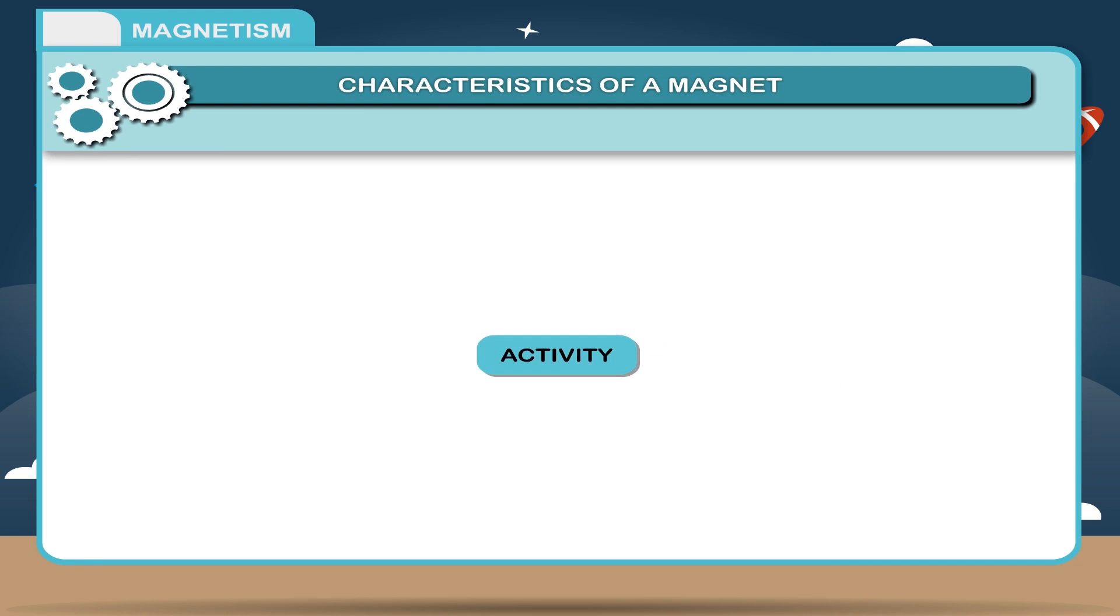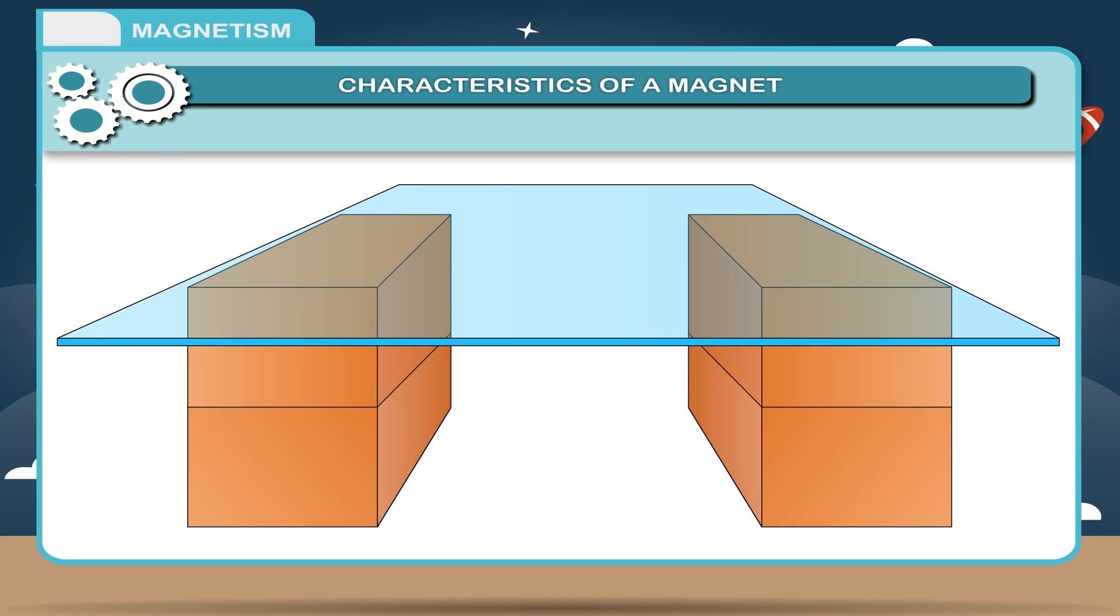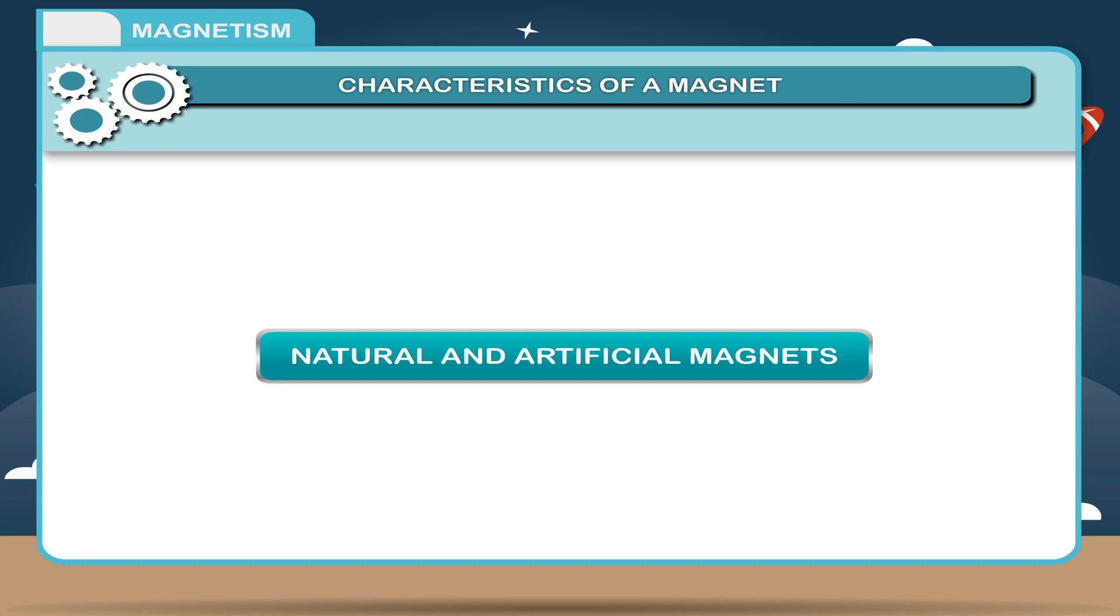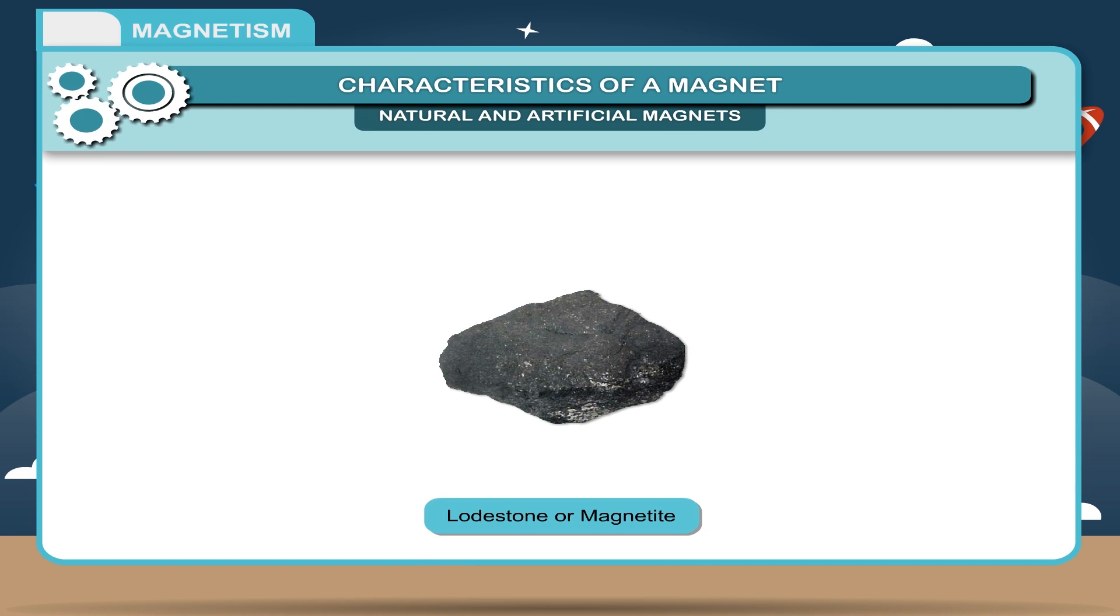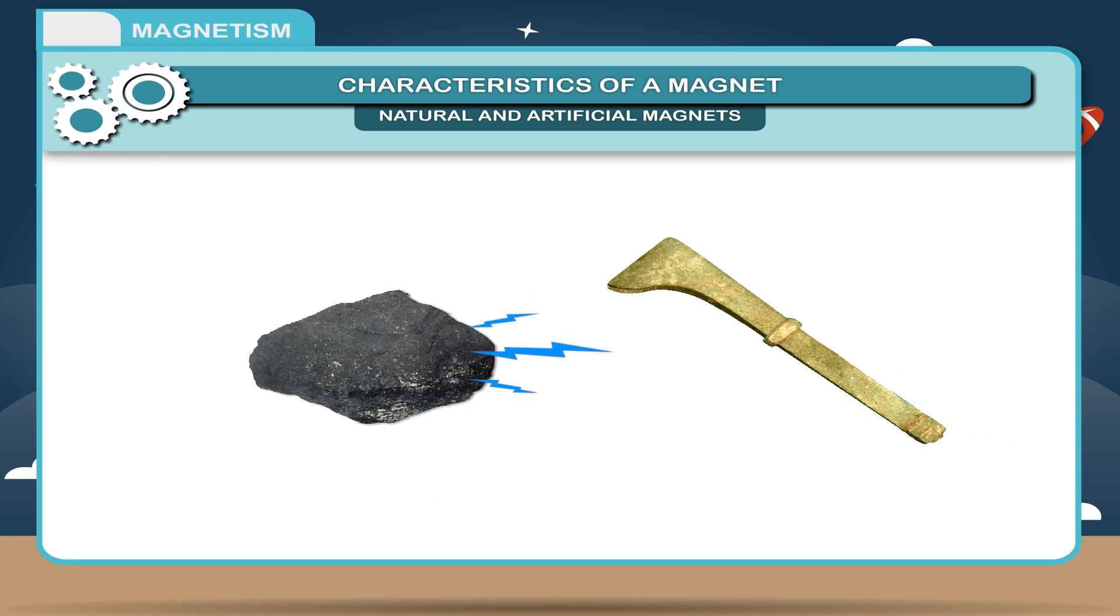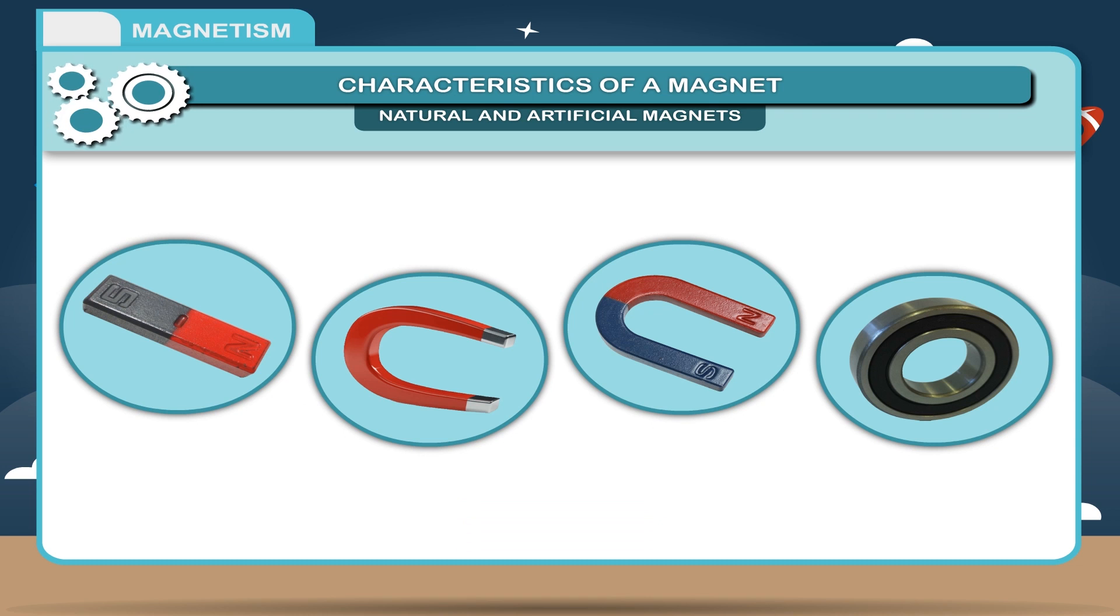Characteristics of a magnet. Substances like loadstone and magnetite that occur naturally and have the property of attracting magnetic substances are called natural magnets. The magnets which are made by man using artificial methods are called artificial magnets. These are generally made of steel in various shapes and sizes.